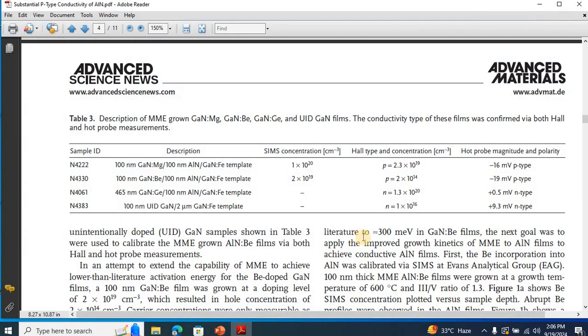And I personally performed some experimentation of the hot probe measurements on a few samples. Like for example, this sample was magnesium-doped gallium nitride, sample N4222. And as you can see that for this sample, on the right side, if you look at the hot probe magnitude and polarity.